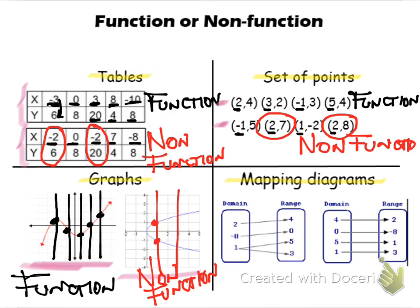For mapping diagrams, I'm going to use my same definition: every x can have only one y value. Look at the value of -1 in the first mapping diagram. It's paired with two different y values, 5 and 3. That tells me this is a non-function.